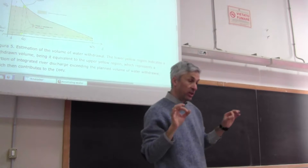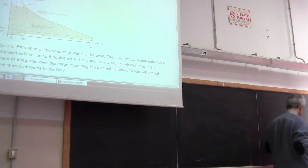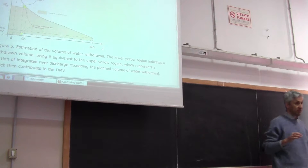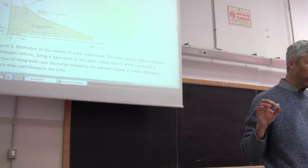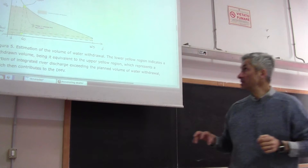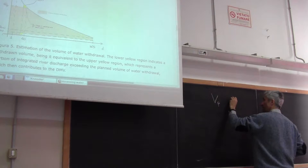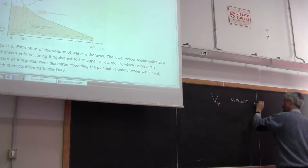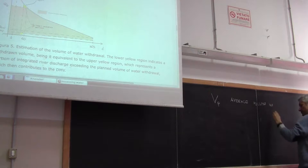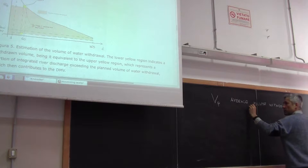From a technical point of view, it is intuitive: the band represents the range where we expect the flow duration curve to lie for a given year, because there is variability from year to year. We can never expect the average; we get something within a certain range. Based on the flow duration curve, we can estimate the water volume we can withdraw from a river and the average river flow. The average river flow and the withdrawable volume can both be computed from the flow duration curve.